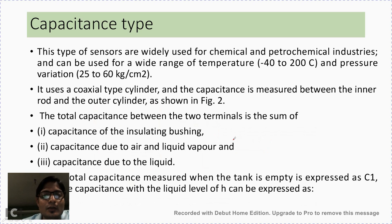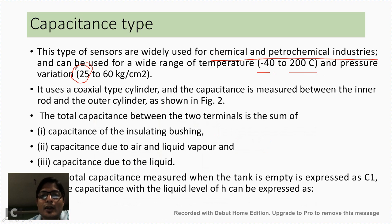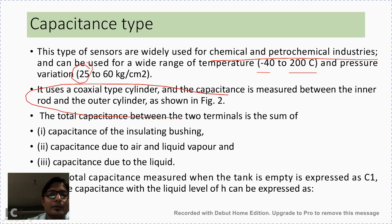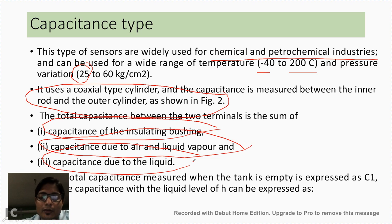Next is capacitance type. These sensors are widely used for chemical and petrochemical industries and can be used for a wide range of temperatures — from minus 40°C to 200°C — and pressures ranging from 25 to 60 kg per centimeter square. It uses a coaxial-type cylinder and the capacitance is measured between the inner rod and the outer cylinder as shown in the figure. The total capacitance at the two terminals is the sum of the capacitance of the insulating bushing, capacitance of the air and liquid vapor, and the capacitance due to the liquid, which directly indicates the level.